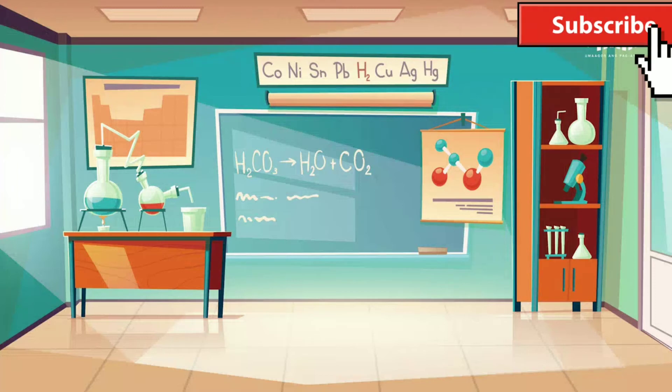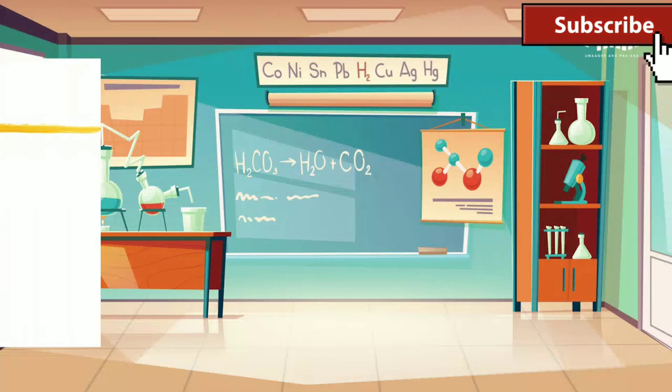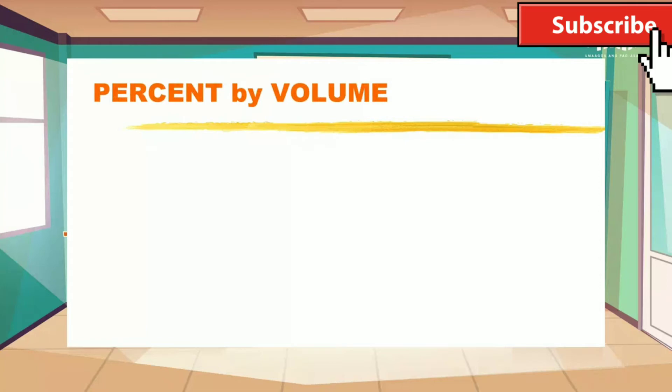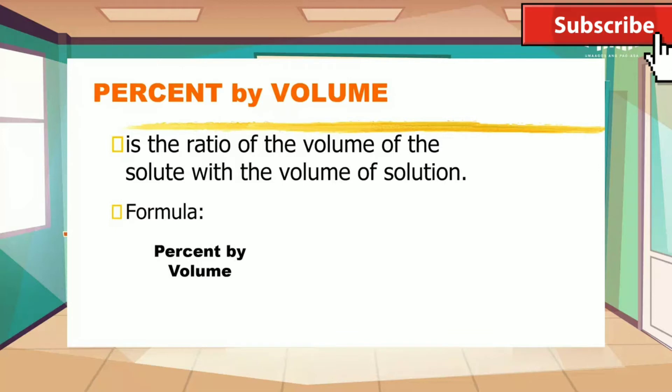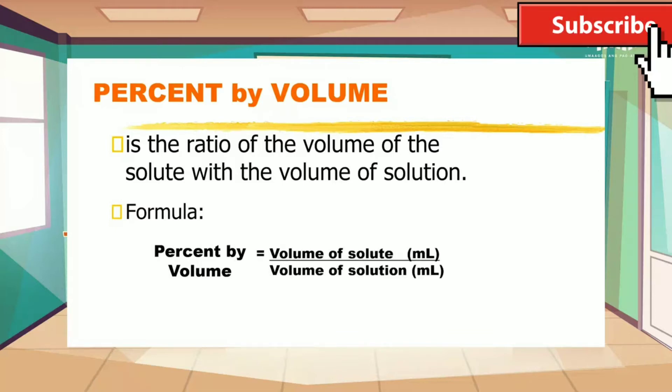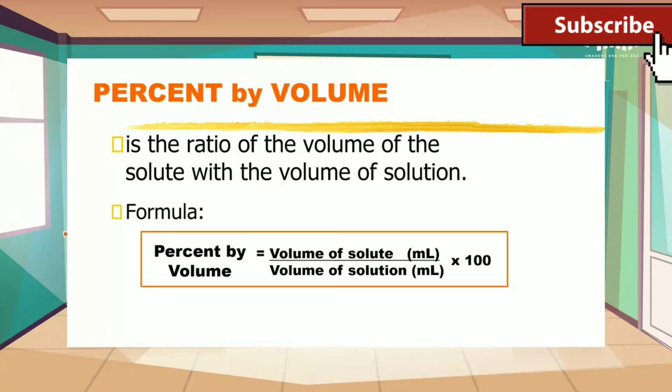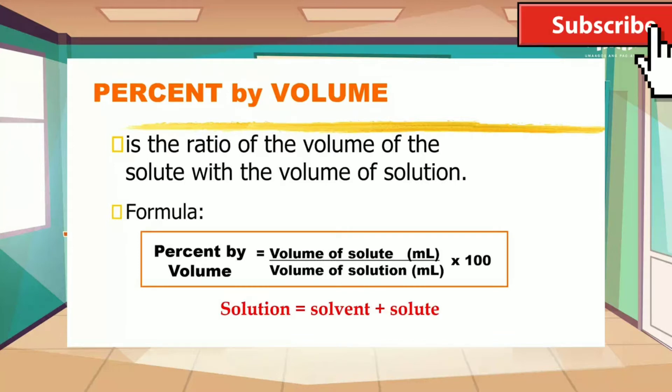Aside from percent by mass, what else is the other way of determining concentration of solutions? Yes, one way of determining concentration of solution is by using the formula of percent by volume. When we say percent by volume, it is the ratio of the volume of the solute with the volume of the solution. And the formula for this way is percent by volume is equal to the ratio of volume of the solute and the volume of the solution multiplied by 100. Take note, class, that when we say solution, it is always a combination of solvent and solute.